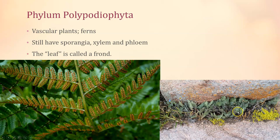These ferns would be in phylum Polypodiophyta. The lab also mentions sporangia — you won't always see these on leaves; they only appear when plants are trying to reproduce. All those little brown spots on the back of this frond are each a sporangium. Also, we don't call these leaves in ferns — we call them fronds.